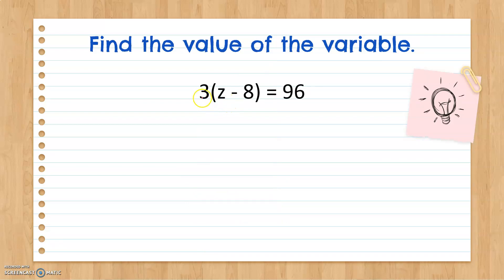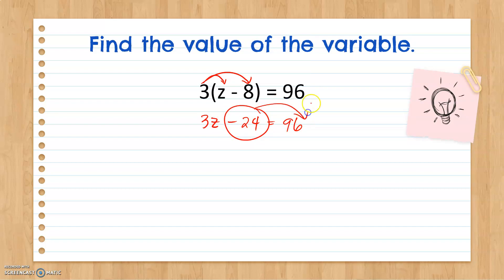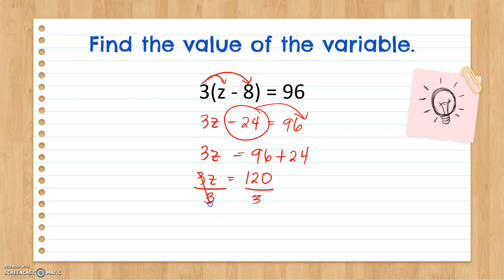For our last example, we have 3 times the difference of Z and 8 equals 96. We cannot simplify Z minus 8 yet because we do not know the value of Z. Therefore, we distribute 3 to Z and to negative 8: 3 times Z equals 3Z, and 3 times negative 8 equals negative 24, so 3Z minus 24 equals 96. We transpose negative 24 to the right side, giving us 96 plus 24. So 3Z equals 120. To find the value of Z, we divide both sides by 3: 3 over 3 equals 1, leaving Z alone, and 120 divided by 3 equals 40. Therefore, Z is equal to 40.